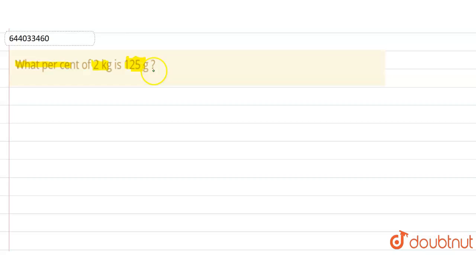First of all, we try to make the units the same. Here we have kg and here we have grams. We know that 1 kg equals 1000 grams, and 2 kg equals 2 times 1000 grams. So that would be equal to 2000 grams.